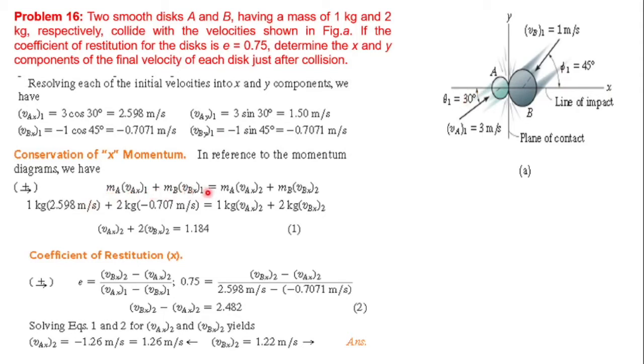Before impact in x direction, disk A plus disk B momentum should be equal to after impact disk A and disk B momentum in x direction. We substitute the known values and have unknown values which are the velocities after impact. This gives us equation one.